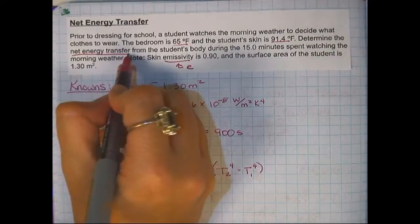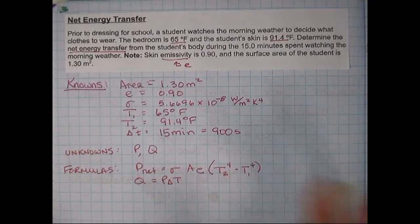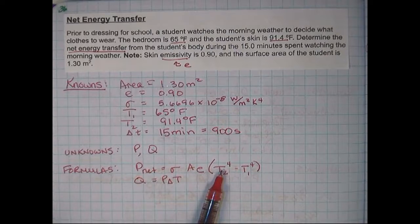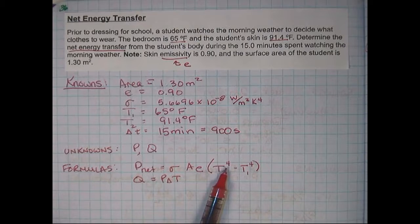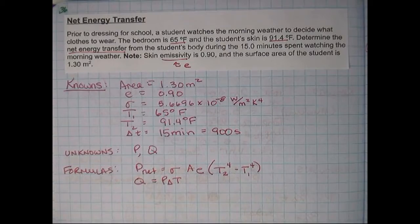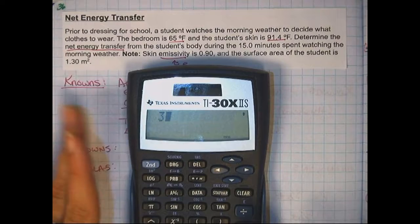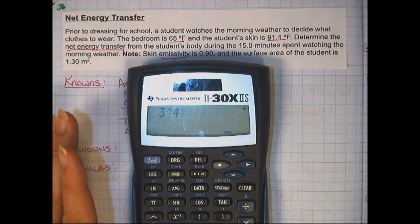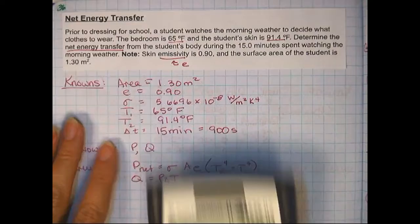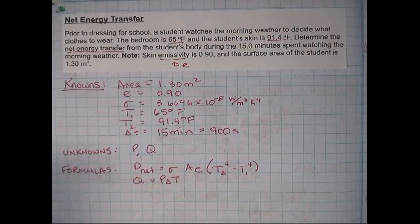In this problem, they're asking us to find the net energy transfer. That's P_net. And we're also going to have to calculate Q as we go along. So, we have this formula here. And an important thing to realize on this formula is this 4 goes with just the T. You have to raise the T to the 4th power before you subtract it. On your calculator, to raise the number to the 4th power, if I wanted to raise 3 to the 4th power, I would use this symbol to the 4th power. Remember, that means 3 times 3 times 3 times 3. So, that's how you do it. So, what we're saying is in this formula, you need to raise the number to the 4th power first before you subtract.